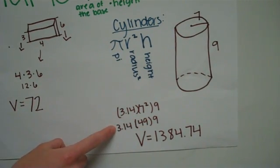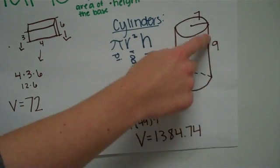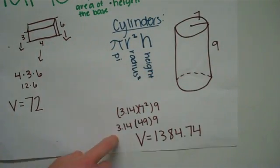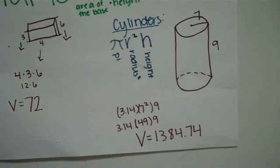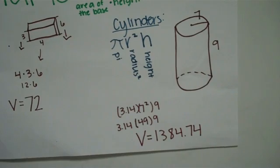For pi, I made it 3.14, and then the height right here, that's 9. And when you multiply them all together, you get 1,384.74 units cubed. Thank you.